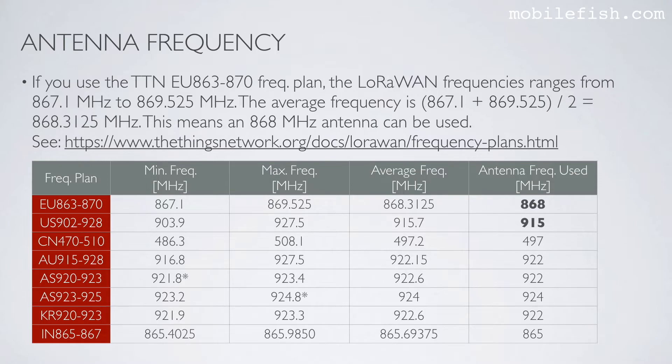If you use the Things Network AU 863 to 870 frequency plan, the LoRaWAN frequencies range from 867.1 MHz to 869.525 MHz. The average frequency is 868.3125 MHz. This means you can use an 868 MHz antenna when using this frequency plan. Here are the other frequency plans with minimum and maximum frequencies. For each frequency plan, you can find the corresponding antenna frequency. For example, in the EU, you use an 868 MHz antenna. For the United States, you use a 915 MHz antenna. For China, you use a 497 MHz antenna.